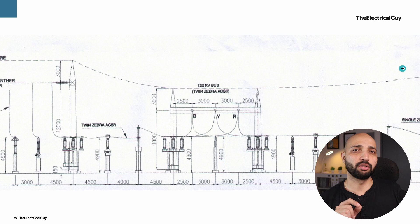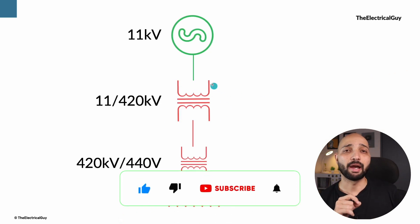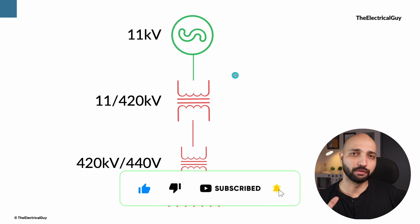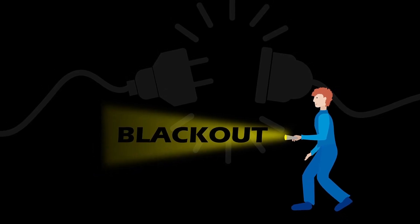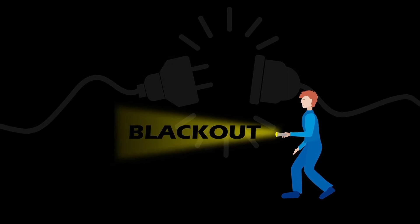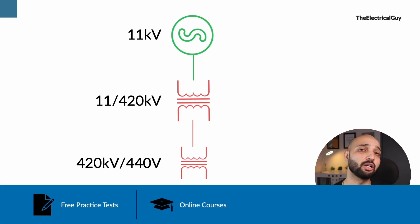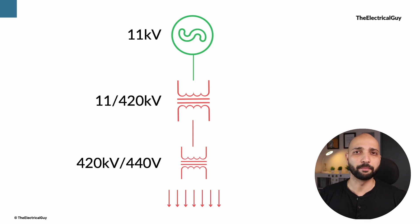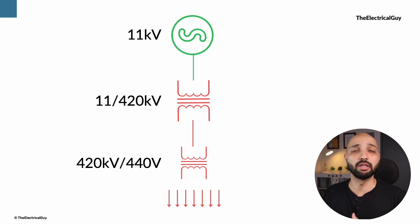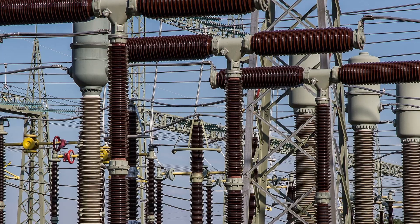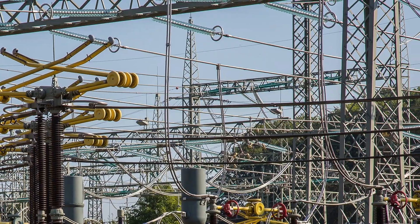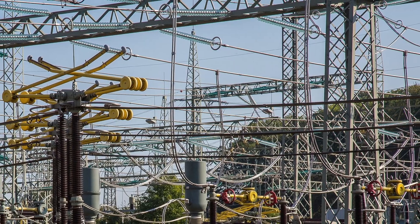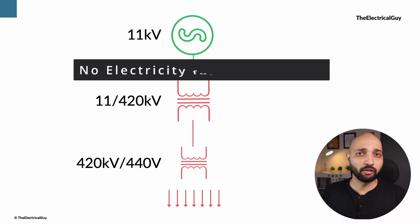Let's say this substation goes off due to a flood situation — this causes a complete blackout of the system. No one is getting electricity, which is a huge loss of money and affects many things dependent on electricity. If the flood lasts a month, or a maintenance activity takes two months to complete, there will be no electricity available during that entire period.